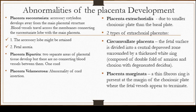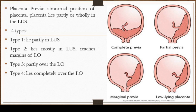Because of this folding, the edge of the placenta is more easily detached from the uterine wall, which may result in antepartum hemorrhage and other complications. The main cause is not well known, so complete examination of the placenta following delivery is always advised. We may also have placenta marginata, where a thin fibrous ring is present at the margin of the chorionic plate where the fetal vessels appear to terminate.